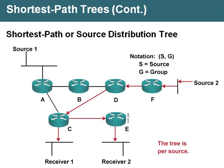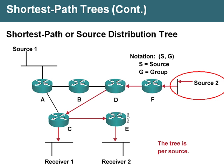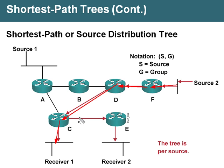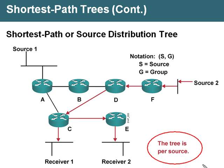To continue our example, we have another source — call it 172.16.1.1 — that wants to send to the same 224.1.1.1 group. Even though we're sending to the same group, we're going to take a different path. This is going to be through routers F, D, C to receiver-1, and over to router E to get to receiver-2. With shortest-path trees, the tree is per source, because different sources are going to have different shortest paths to get to receivers.